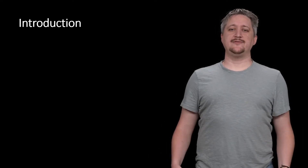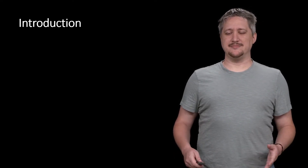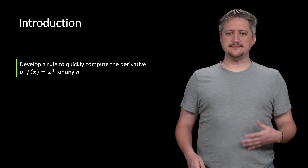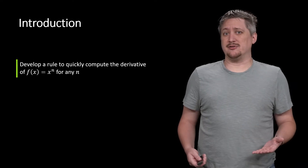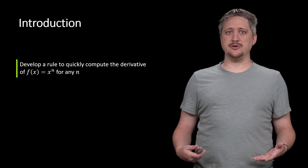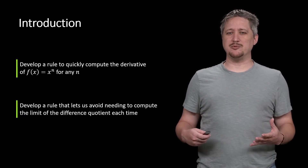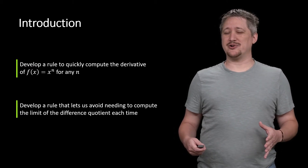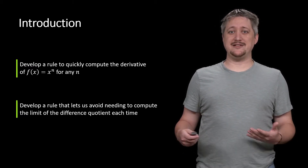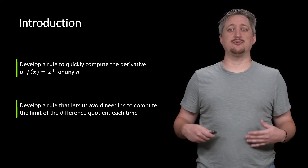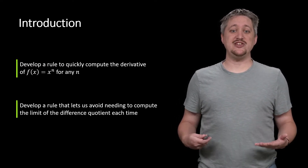Hello. In this video we are aiming to develop a rule to take derivatives of polynomials. We've seen earlier that we could split them apart using sums, differences, and constant multiples. So really what we're after is the x to the n part of a polynomial — a monomial. The goal is to avoid the difference quotient and come up with a rule that immediately tells us what the derivative of x to the n is.